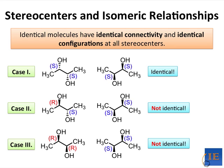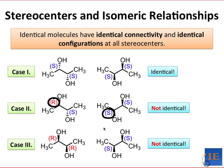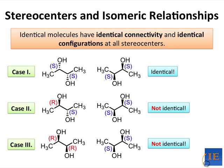In cases two and three, what we can see is that the molecules are not identical. In case two, the stereo center on the left has a different configuration in the left-hand molecule than it does in the right-hand molecule. And in case three, both stereo centers in the left-hand molecule differ from those in the right-hand molecule. Thus, these sets of molecules are not identical to one another. However, there's an important difference between case two and case three that we'll see in a second.